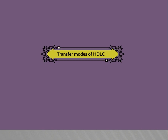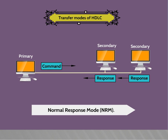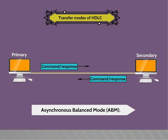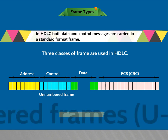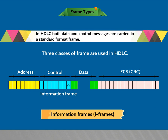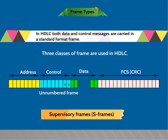Transfer modes of HDLC. HDLC has three data transfer modes: normal response mode (NRM), asynchronous response mode (ARM), and asynchronous balance mode (ABM). Frame types. In HDLC, both data and control messages are carried in a standard format frame. Three classes of frames are used: unnumbered frames (U-frames), information frames (I-frames), and supervisory frames (S-frames).